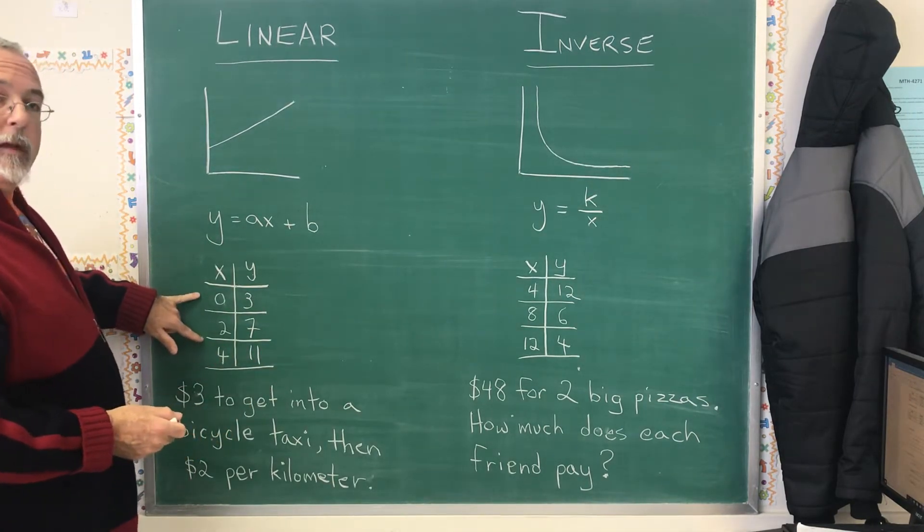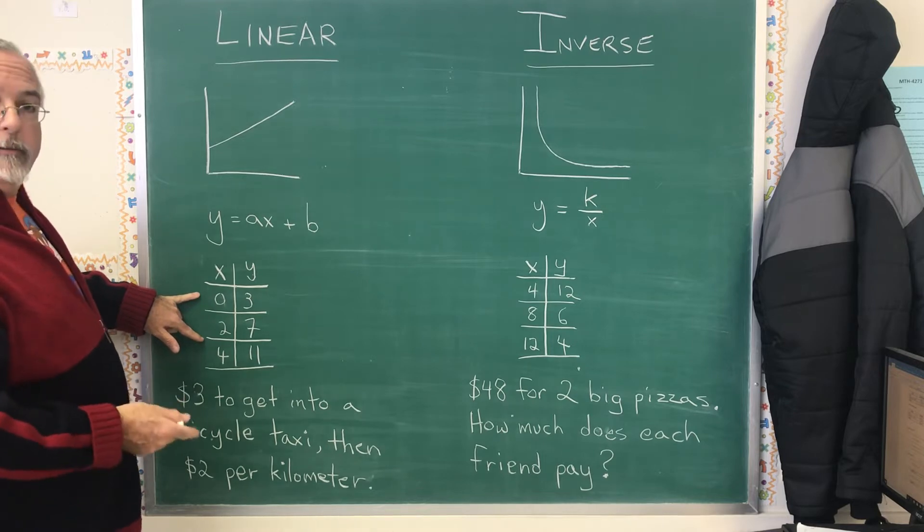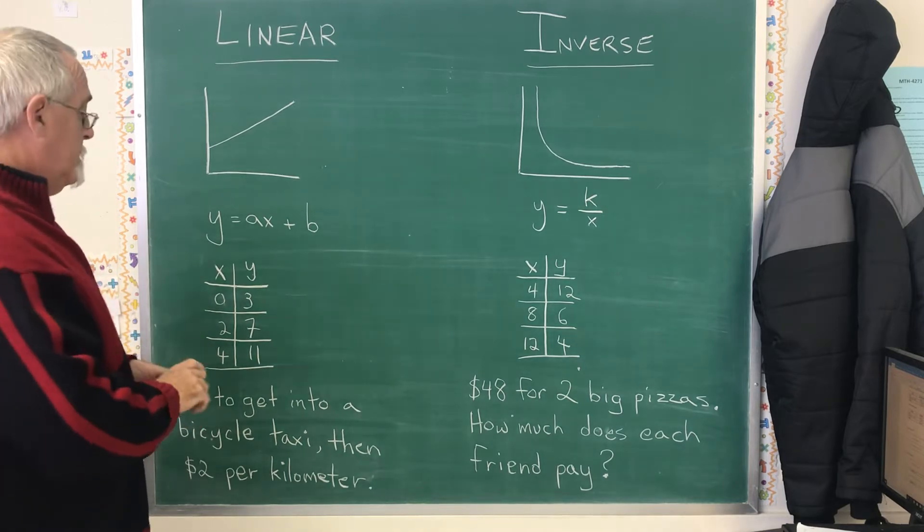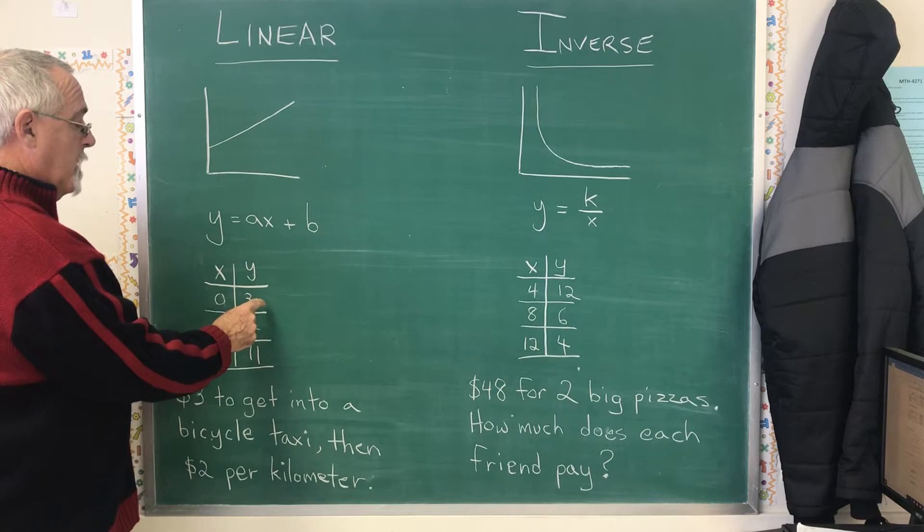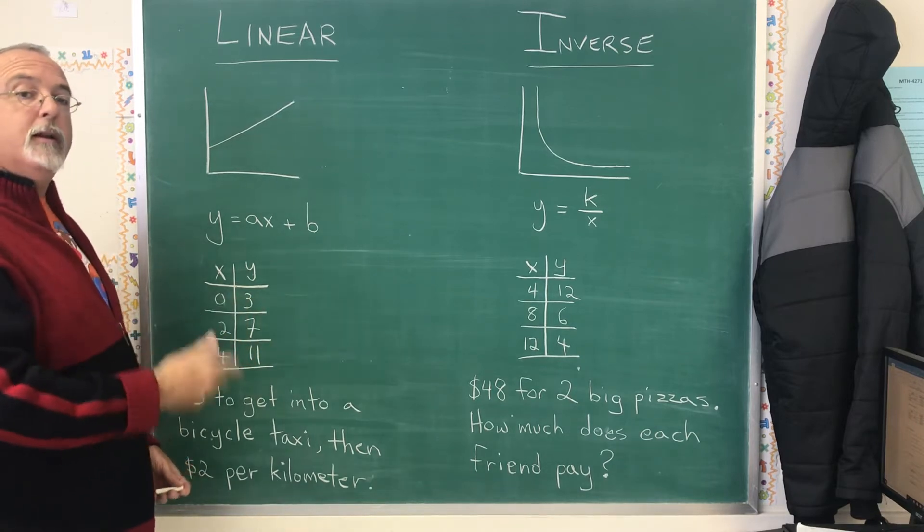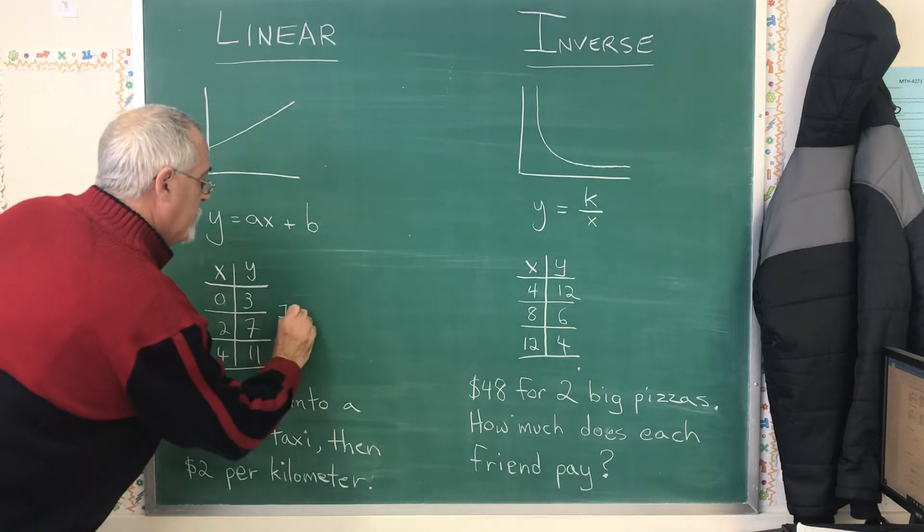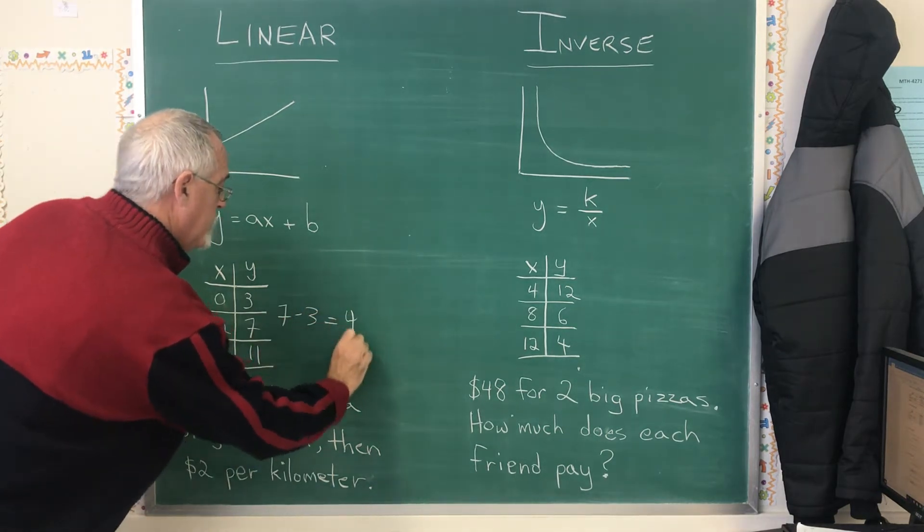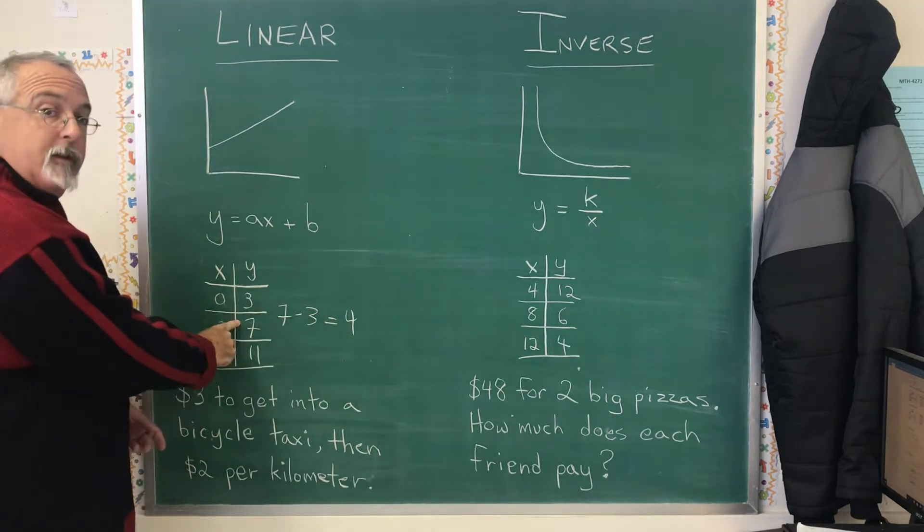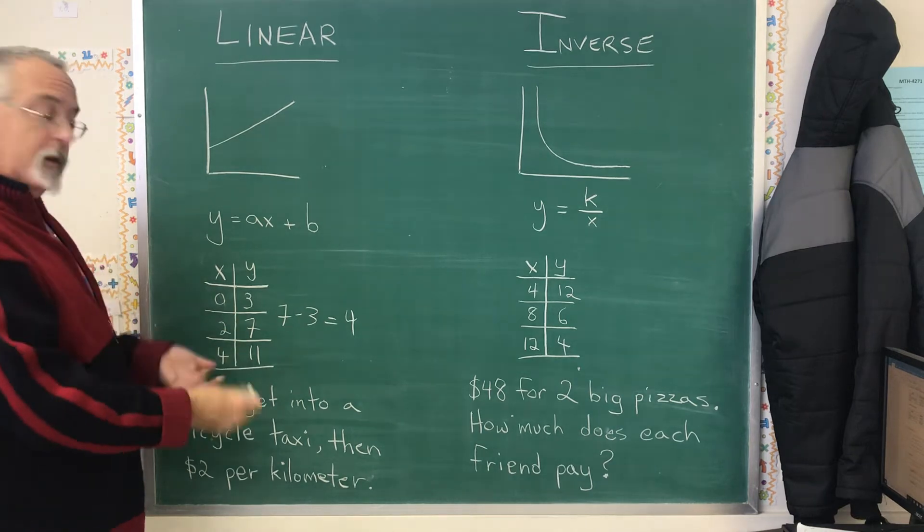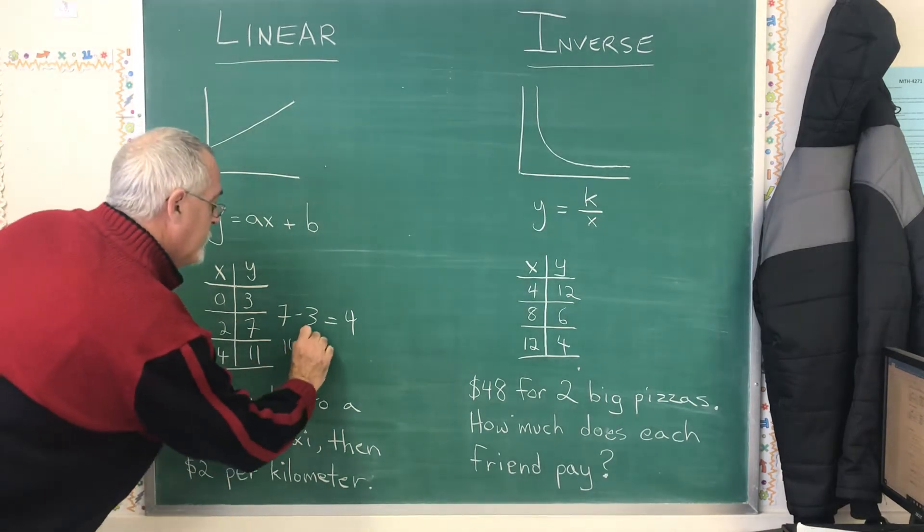For the linear, the trick is called constant difference. And what that means is you are subtracting a y-coordinate from the next y-coordinate and seeing what the difference is. 7 minus 3 is 4. 11 minus 7 is the next pair of y-coordinates I can do with this and 11 minus 7 is also 4.